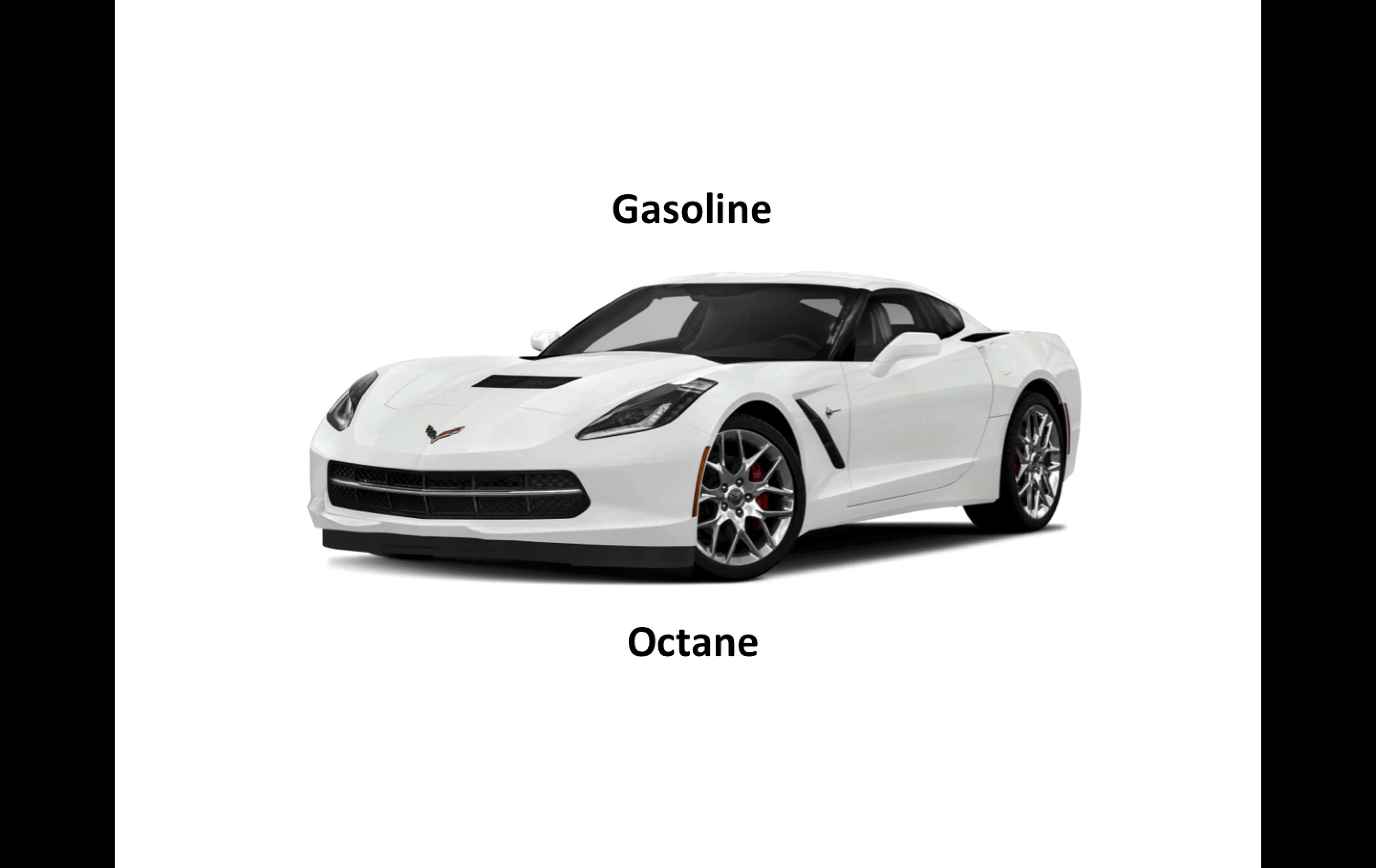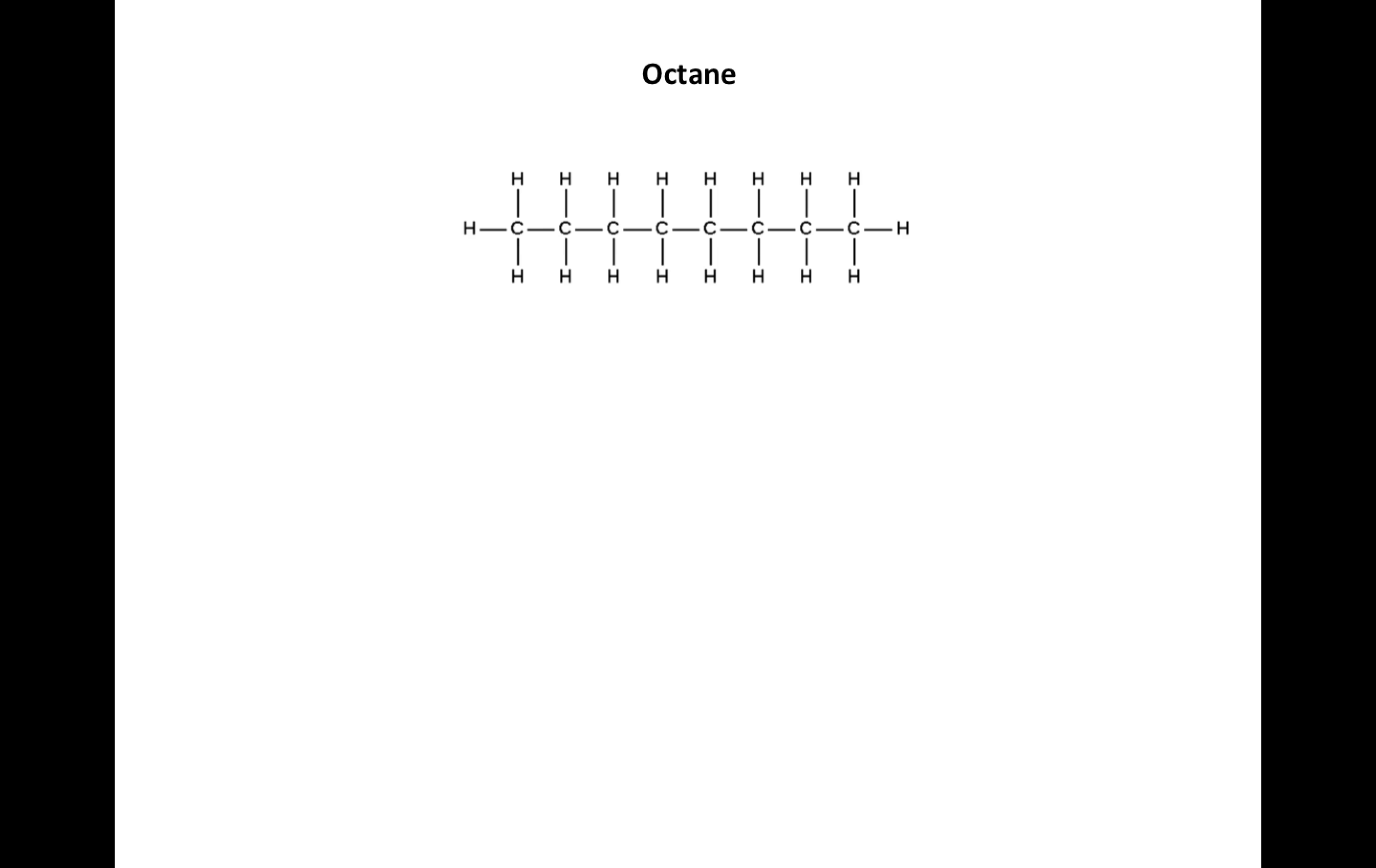Cars burn gasoline which is a complicated mixture of hydrocarbons but we can approximate those by just considering octane as a good example. Here is the structure of octane which has this molecular formula. When combusted in the presence of oxygen, octane yields carbon dioxide and water which is the product of the combustion of any hydrocarbon. And there is quite a bit of heat given off of course too.